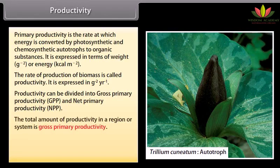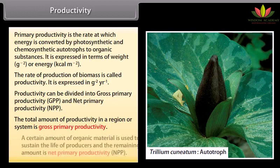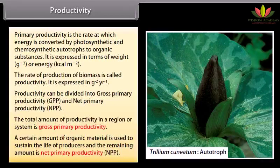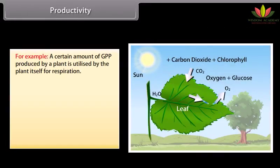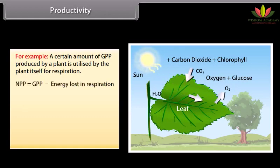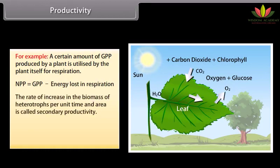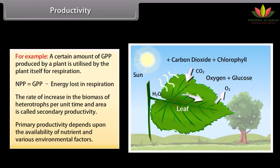The total amount of productivity in a region or system is gross primary productivity. A certain amount of organic material is used to sustain the life of producers, and the remaining amount is net primary productivity (NPP). NPP is equal to GPP minus energy lost in respiration. The rate of increase in the biomass of heterotrophs per unit time and area is called secondary productivity. Primary productivity depends upon the availability of nutrients and various environmental factors.